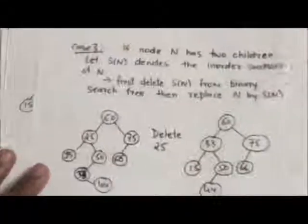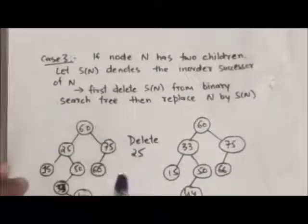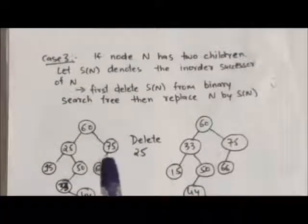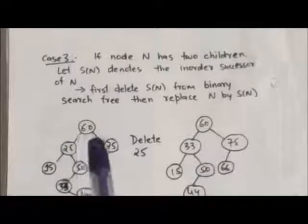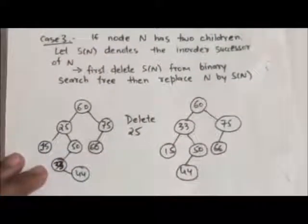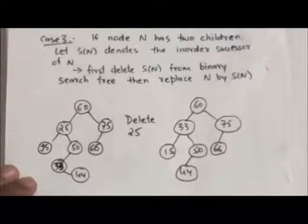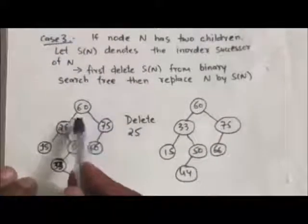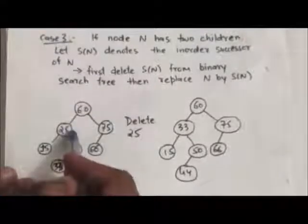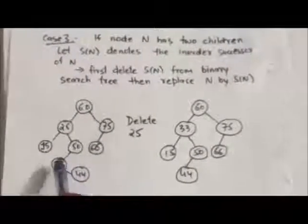Third case: suppose node N has two children, and let SN denote the in-order successor of node N. Then node N is deleted from the binary search tree by first deleting its in-order successor SN, and then replacing node N by SN. Consider this binary search tree — we have to delete the node with value 25, which has two children. The in-order successor of node 25 is the node with value 33.